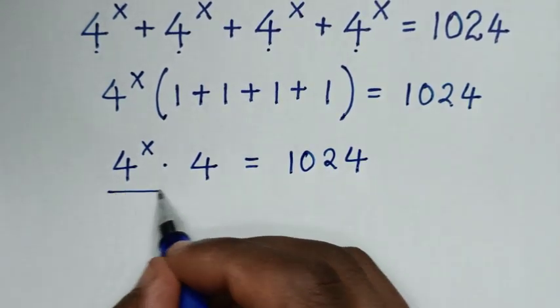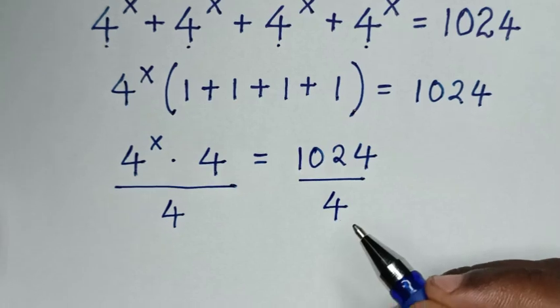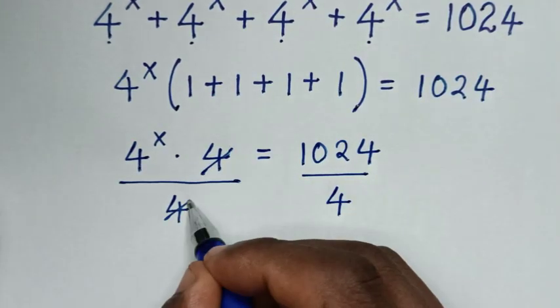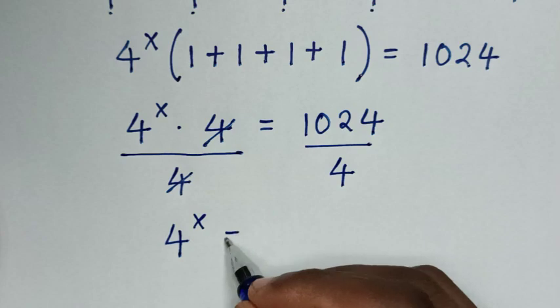Then we will divide by 4 on both sides. So 4 and 4 will cancel, then it will be 4^x equals 1024 divided by 4.